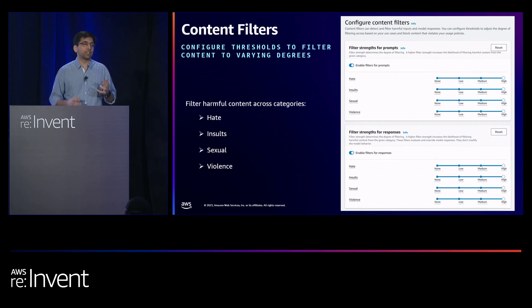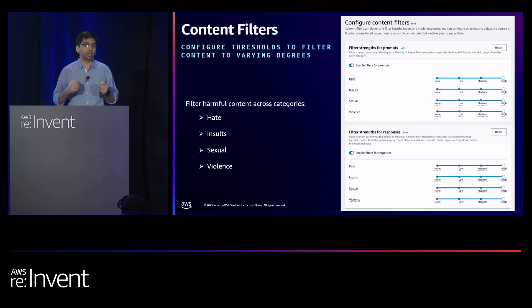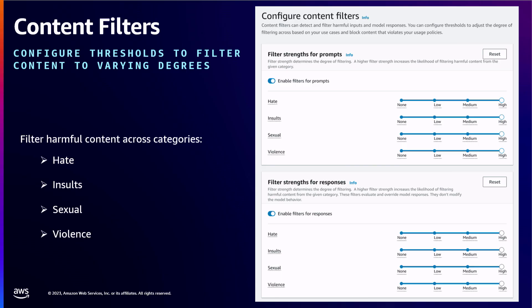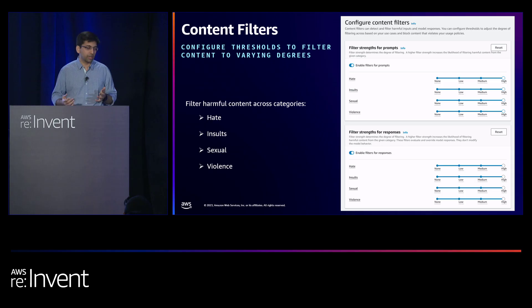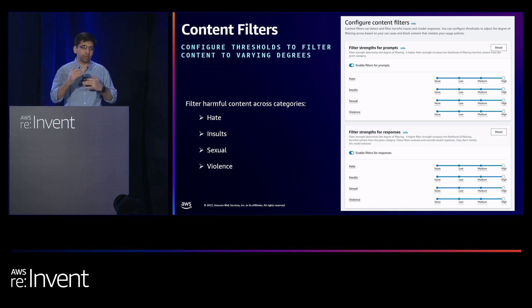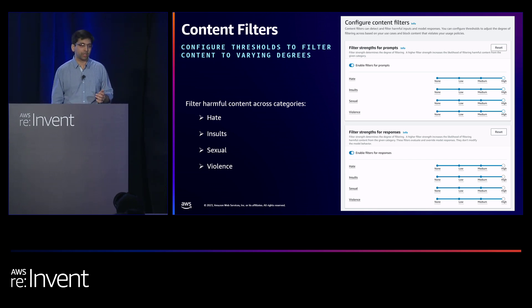The next policy is content filters, which targets toxicity and harmfulness. Content filters come with four granular categories: hate, insults, sexual, and violence. You also have configurable thresholds to adjust the degree of filtering. The higher the degree of filtering, the stricter and more aggressive it becomes, and the lesser the likelihood of seeing harmful content. You have configurable levers both for user input and foundation model generated responses that you can individually fine-tune.